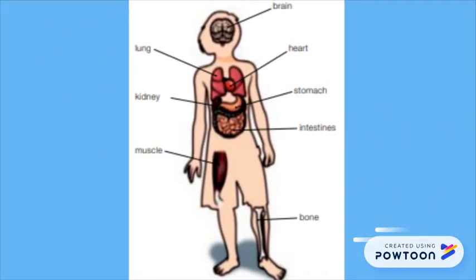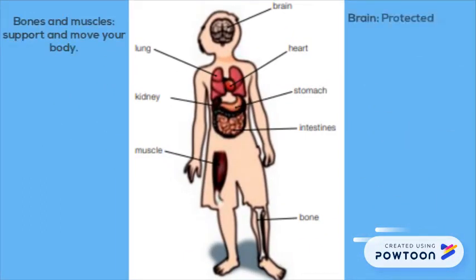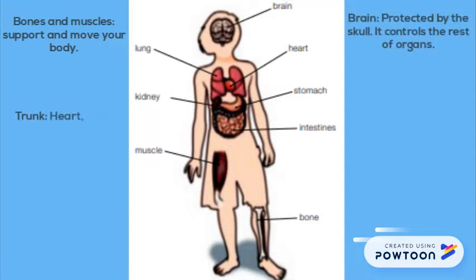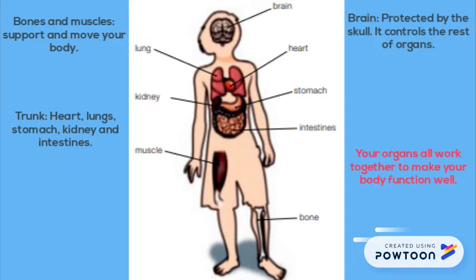Now the inside of your body. Bones and muscles support and move your body. The brain, protected by the skull, controls the rest of the organs. The trunk contains the heart, lungs, stomach, kidney and intestines. Remember, your organs all work together to make your body function well.